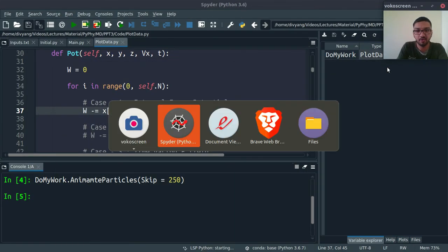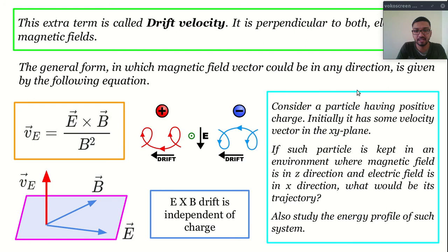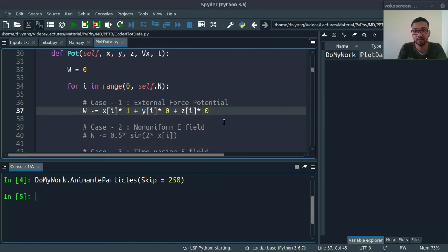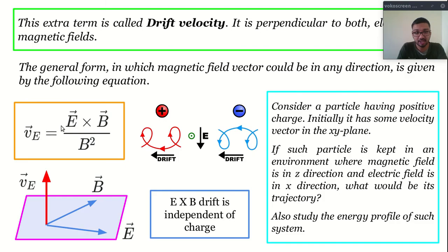Let's jump to our presentation. We have concluded that in this case, total energy remains constant. But as the electric field does work on our particle, we should change our potential energy term. And we have also verified this E cross B drift equation through our simulation.